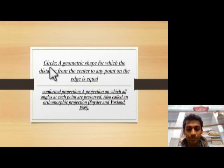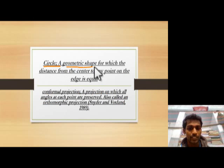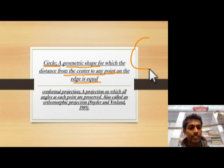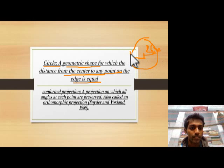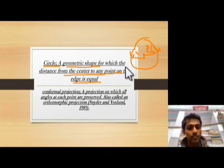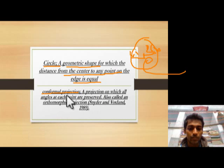Now we describe the circle. A circle is a geodetic shape for which the distance from the center to any point on the edge is equal. If it is a circle, the distances on the edge are equally equal — for example, two centimeters on all sides.